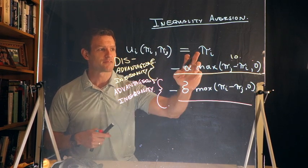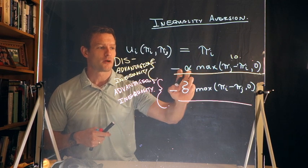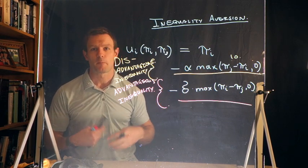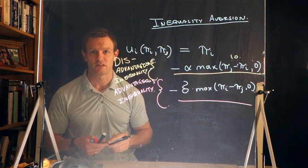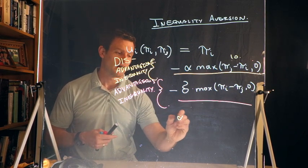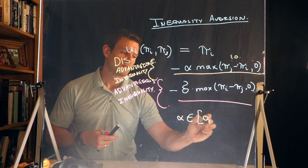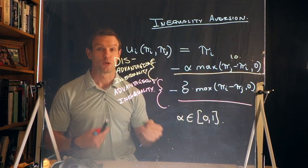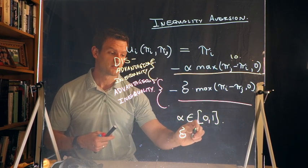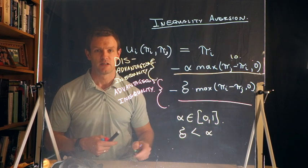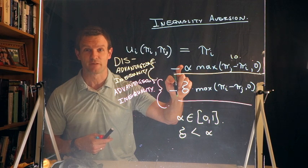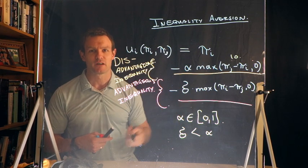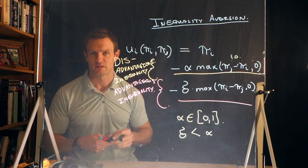So I have some positive payoff, the $5 that I received, but from those $5 I'm subtracting α times 10. Now, α, we have to think about parameterizing. We haven't yet said what the size of α and δ is. In general, we assume that α is an element of [0,1]. So zero is less than or equal to α is less than or equal to one. We also say that δ is less than α typically. So that is, I dislike disadvantageous inequality more than I dislike advantageous inequality.